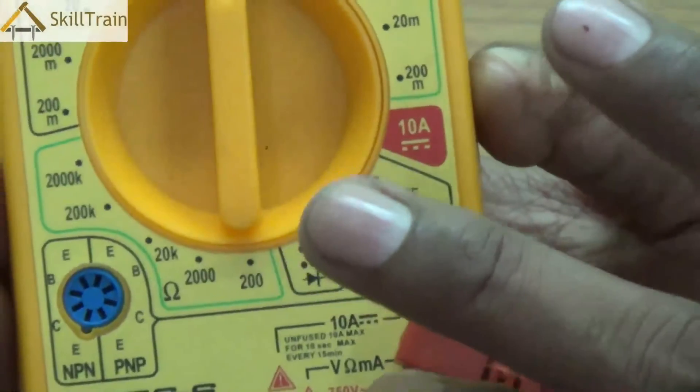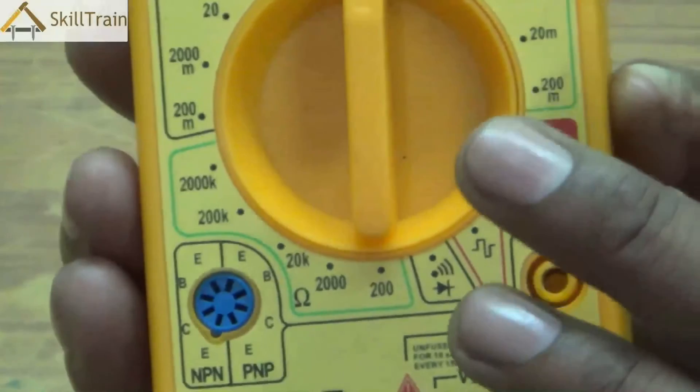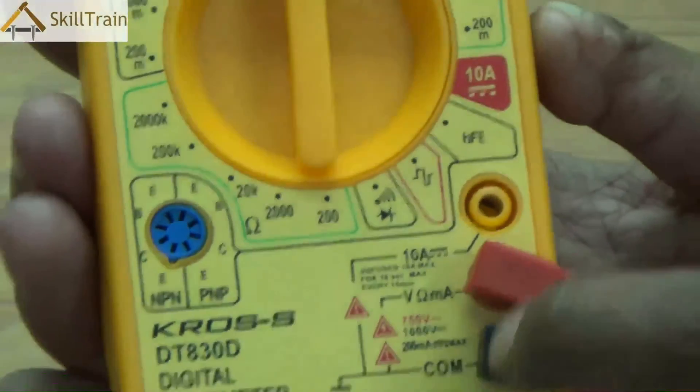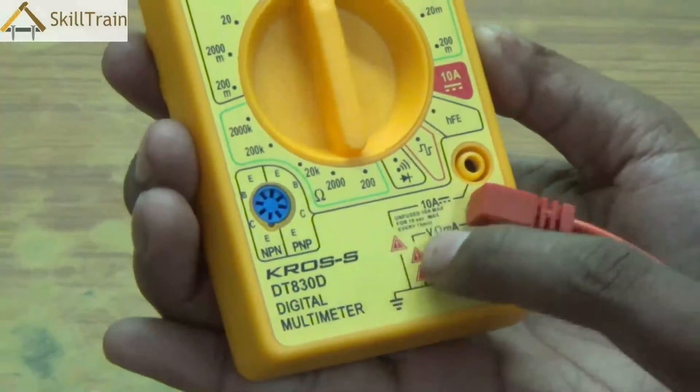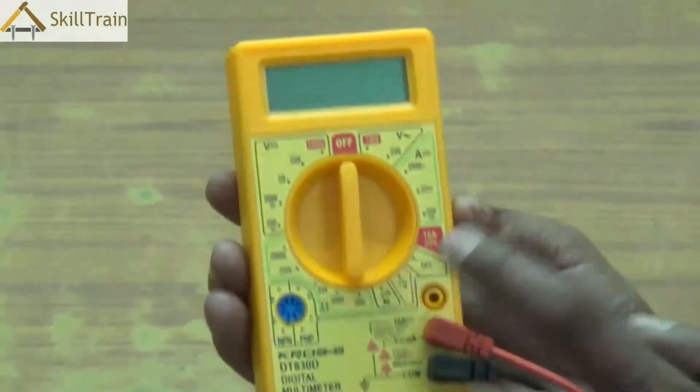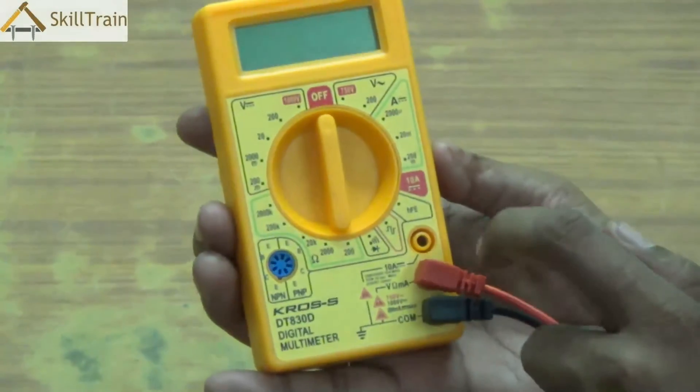Right above that is another point where you can check higher values of electricity. However, commonly in a multimeter we normally use the red and black probes and that is more than enough to measure a lot of the electronic components. Now let's try and understand what are these other readings that are displayed on the multimeter.